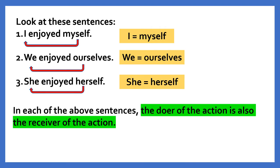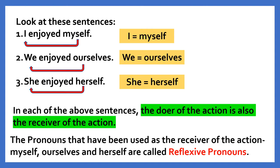In each of these sentences, the doer of the action is also the receiver of the action. The pronouns that have been used as the receiver of the action — myself, ourselves and herself — are called reflexive pronouns.